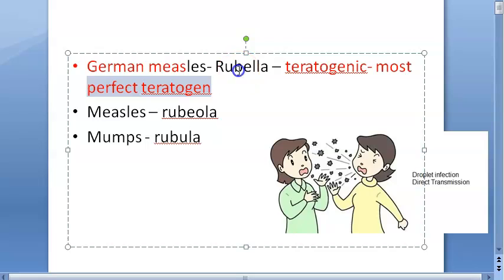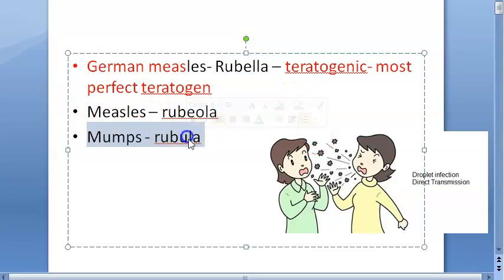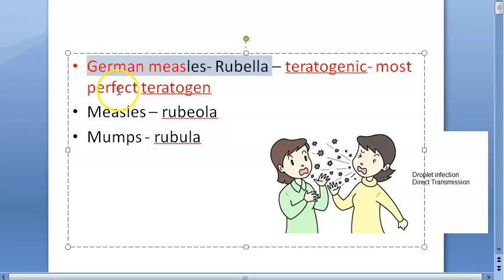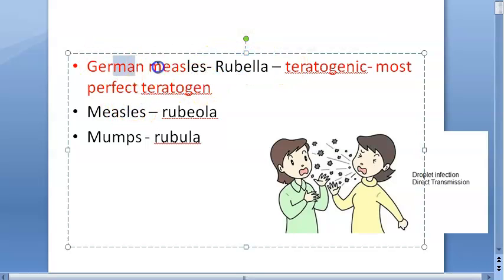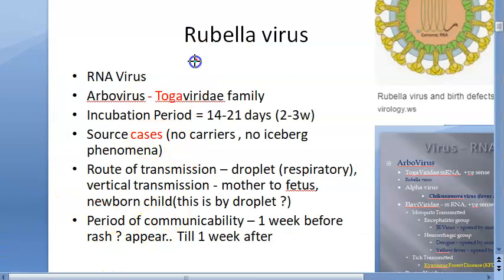Rubella is considered the most perfect teratogen. If the mother gets it, the fetus can have congenital defects — that is why it is important. Note: measles is also called rubeola and mumps is called rubulla. What we are reading here is rubella, which is German measles, and it is a teratogen.